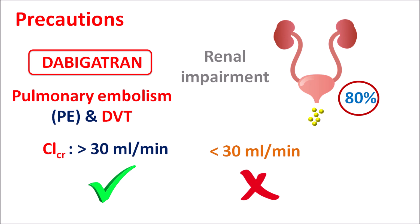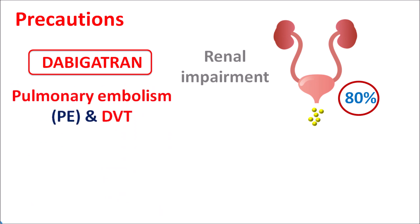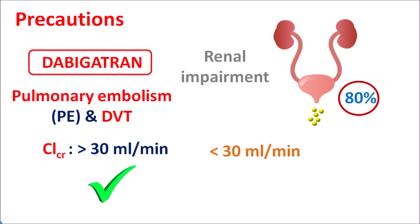The limit is more stringent in the case of pulmonary embolism and deep vein thrombosis — even with moderate renal impairment, where creatinine clearance is less than 30 mL/min, this drug should be avoided. These limits can also change based on co-administration with other drugs. For instance, P-glycoprotein inhibitors may further increase dabigatran levels, requiring more stringent dose adjustments. In patients with creatinine clearance greater than 30 mL/min, normal dosing can be given, but with moderate to severe renal failure (creatinine clearance less than 30 mL/min), dabigatran should not be used.